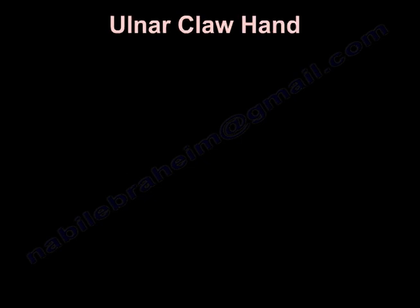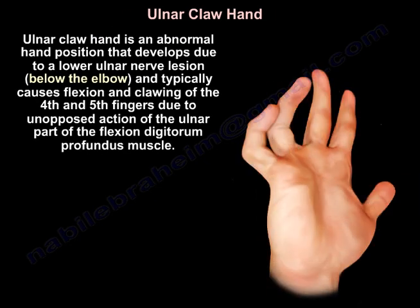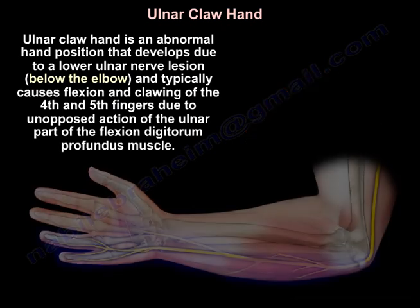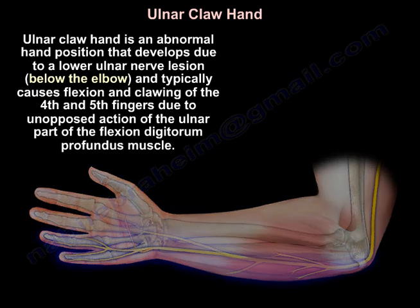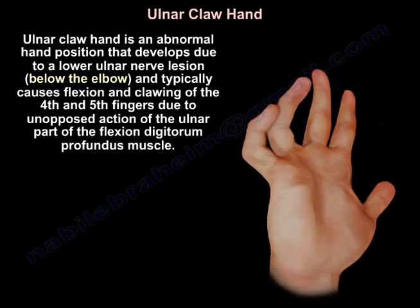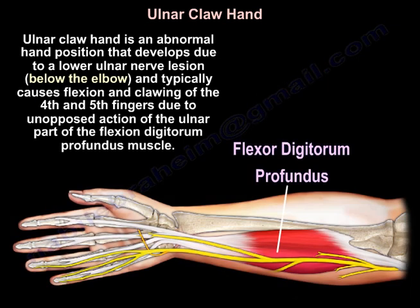Ulnar claw hand is an abnormal hand position that develops due to a lower ulnar nerve lesion below the elbow, and typically causes flexion and clawing of the fourth and fifth fingers due to the unopposed action of the ulnar part of the flexor digitorum profundus muscle.